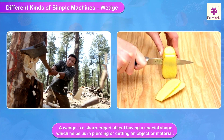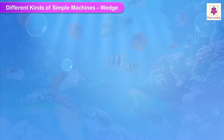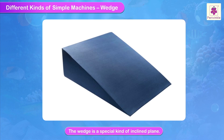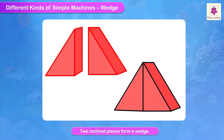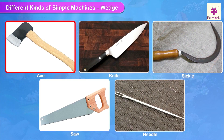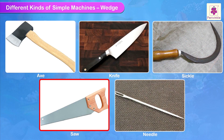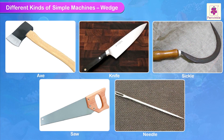Wedge. A wedge is a sharp-edged object having a special shape which helps us in piercing or cutting an object or material. The wedge is a special kind of inclined plane. Place two inclined planes back to back and we get a wedge. Axe, knife, sickle, saw, and needle are examples of a wedge.